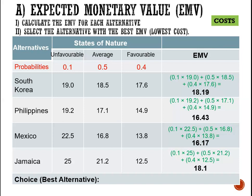So we are now choosing our location. South Korea has an expected cost of 18.9 million, Philippines 16.43 million, Mexico 16.17 million, and Jamaica 18.1 million. The lowest cost is for Mexico, so our choice on the EMV is Mexico, with the lowest expected cost of 16.17 million. We note this best EMV because it will also be used in the next technique to calculate the expected value of perfect information.